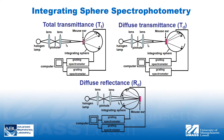Collimated transmittance of the mouse ear was calculated by subtracting diffuse transmittance from the total transmittance signal for each wavelength of the spectral range investigated. For diffuse reflectance measurements, shown in the bottom configuration, light was focused on the mouse ears attached to the exit port of the integrating sphere.